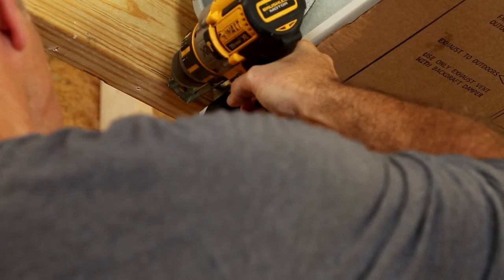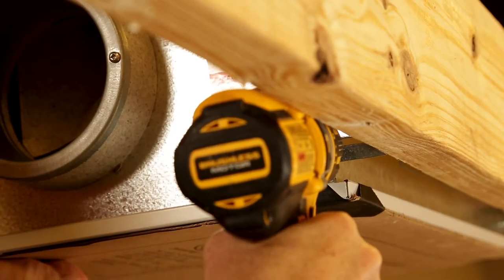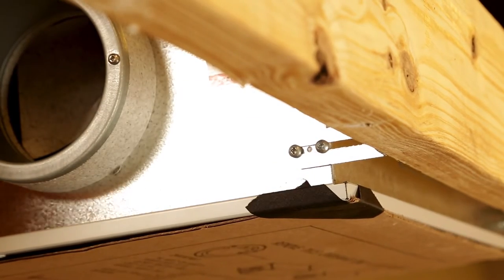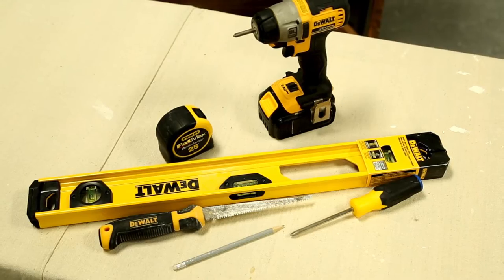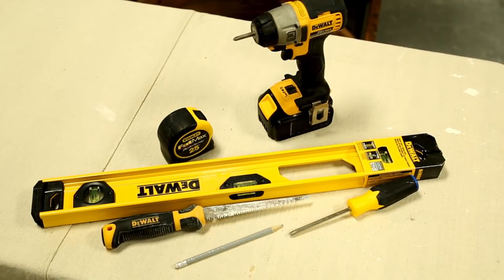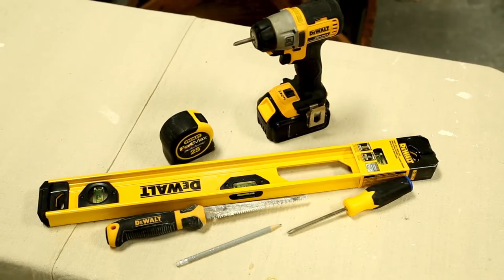The installation is fast and easy in new construction. All necessary brackets and screws are included with the ERVS-100. You will also need a Phillips screwdriver, a pencil, a level or straight edge, and a drywall saw.